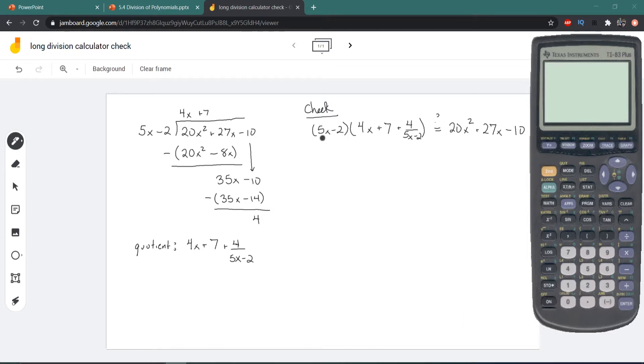If we wanted to check this we would have to multiply 5x minus 2 by 4x plus 7 plus 4 over 5x minus 2. Now the 4 over 5x minus 2 part is what makes this especially annoying to check by hand. Luckily there's a way that we can check it on the calculator.